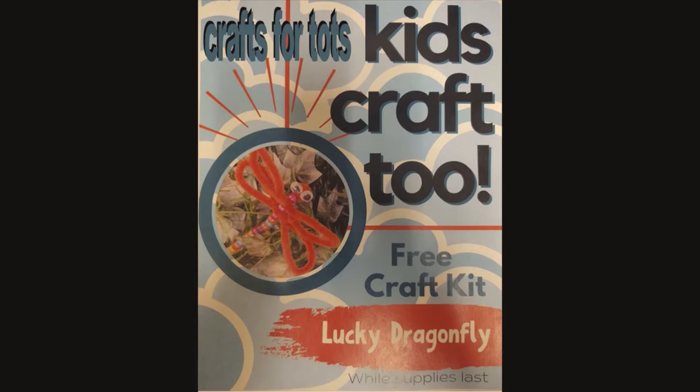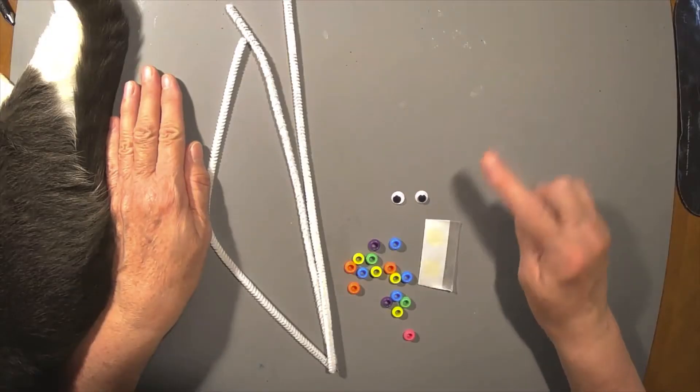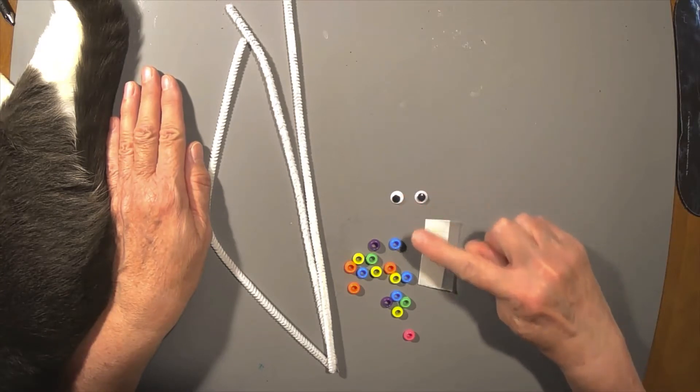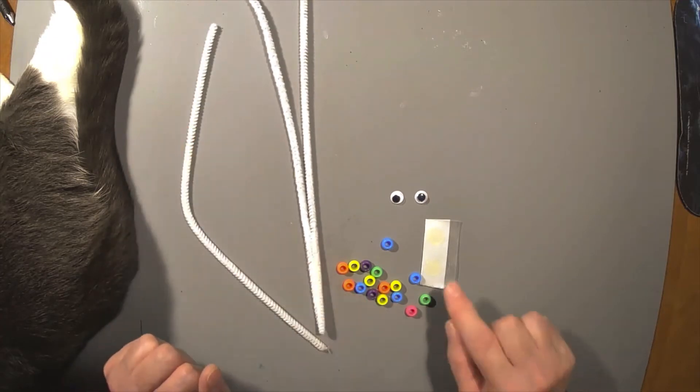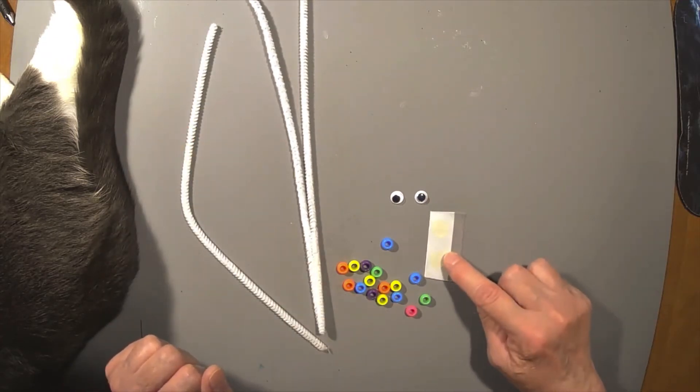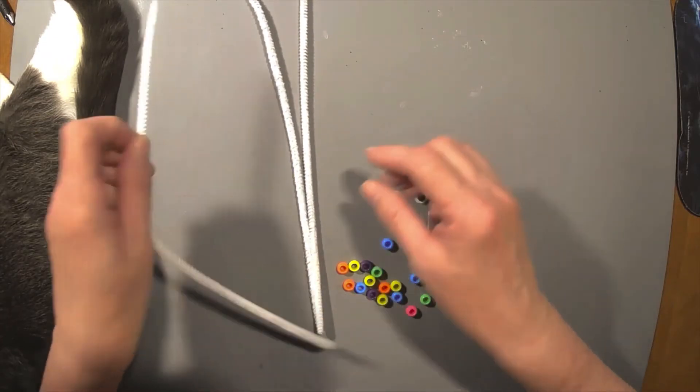If you get out your craft kit and open it up, you should have three pipe cleaners, a couple of eyeballs, around 16 beads, and two glue dots. And the cat tail is optional. Most of you know by now my cat Fingers has to be in all the videos.